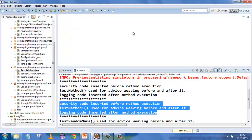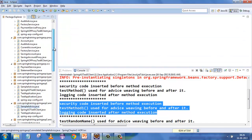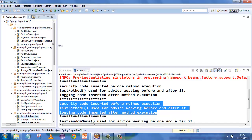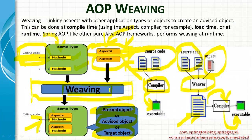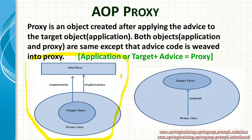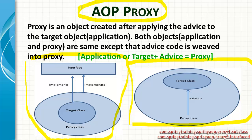We have seen two ways of doing aspect-oriented programming. Now we need to understand how weaving actually happens. Weaving happens in two ways: the first is the interface way and the second is the inheritance way. Everything in AOP is done through a proxy. A proxy is an object created after applying advice to the target object — when you combine advice and target object, you get a proxy.